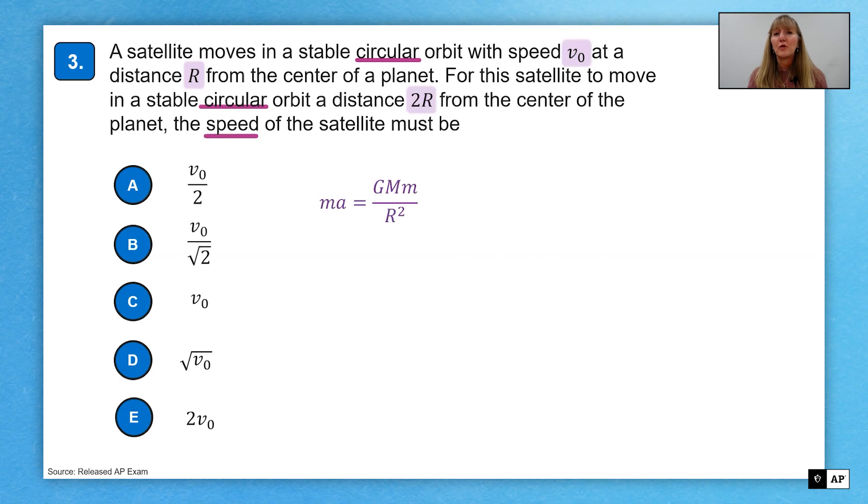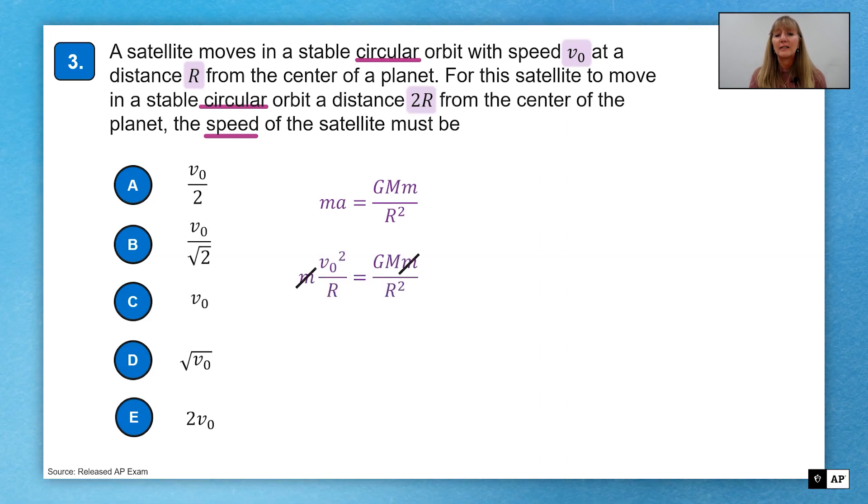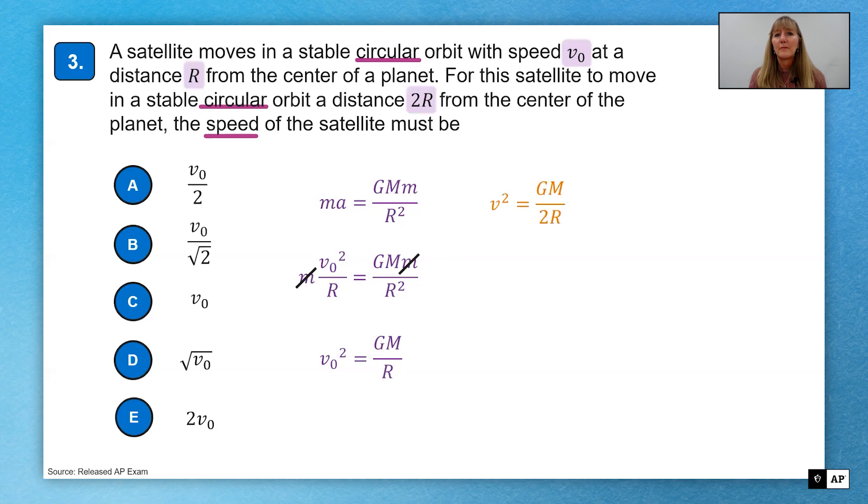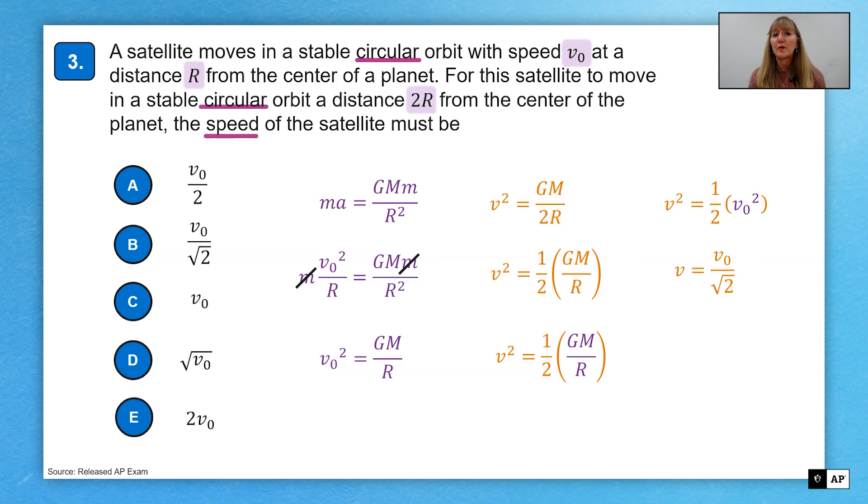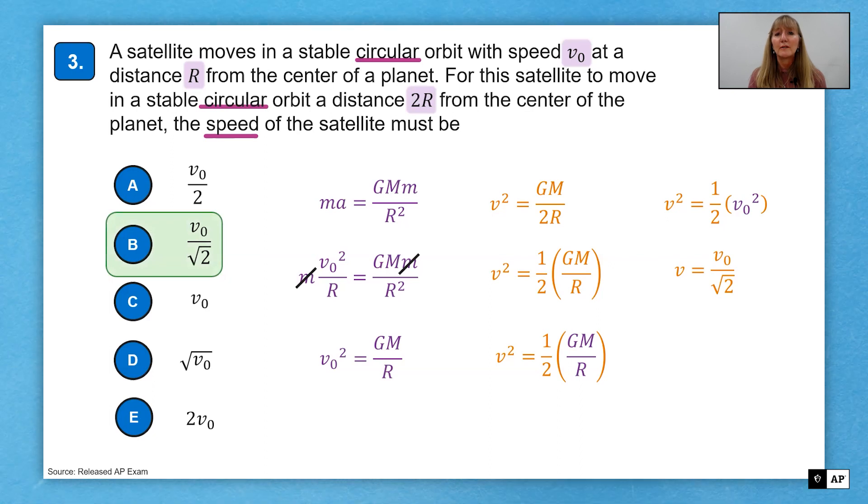Starting with my gravitational force equation. This time, since I want speed, I know that the acceleration is centripetal acceleration because the orbit is circular. And centripetal acceleration is V squared over r. The mass of the satellite cancels out and solving for V, I get V squared equals big G, big M over r. Now I'm going to substitute in my new radius or my new distance of two r. And I see big G, big M over r in the equation from my original. Substitute that in for V naught squared. Take the square root of both sides, and I get the speed of V naught all over radical two, which is choice B.